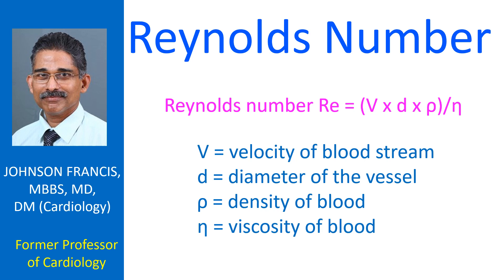Reynolds number Re is equal to V × d × ρ / η, where V is the velocity of bloodstream, d is the diameter of the vessel, ρ is the density of blood, and η is the viscosity of blood.